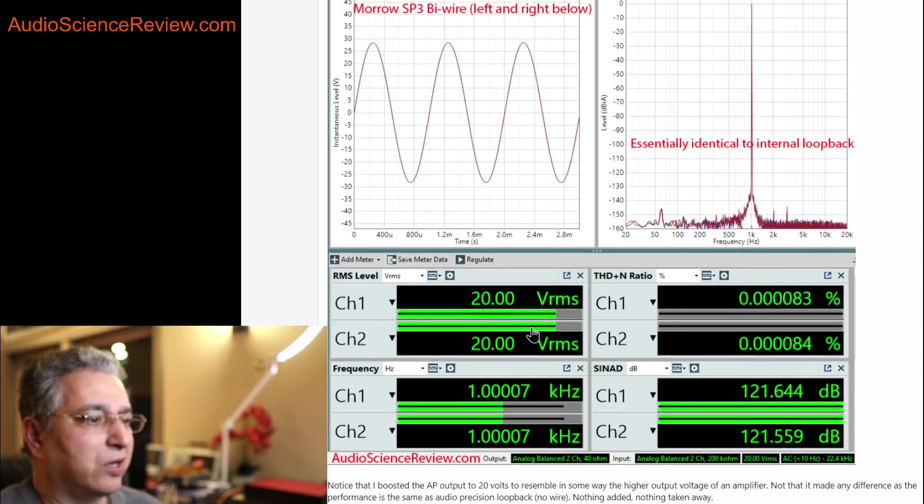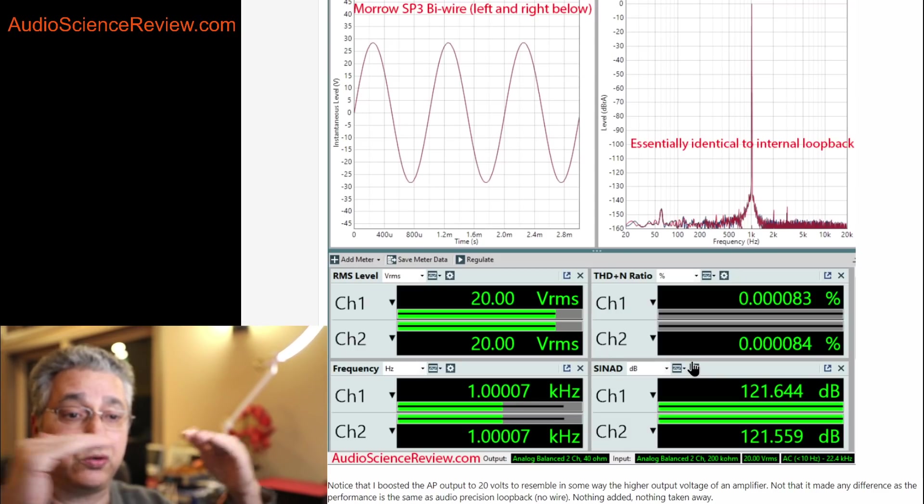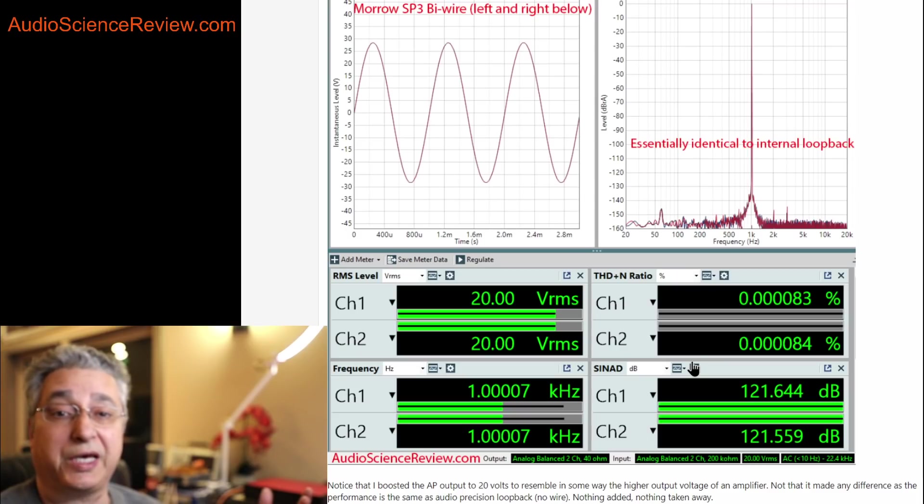So I went ahead and connected the input to output. My Audio Precision analyzer is quite capable, so I can dial up the output to 20 volts, simulating an amplifier producing probably around 50 watts or so into 8 ohms. And when I do that, there's nothing there to see in that the SINAD is 122 dB, which is world-class for DACs. Amplifiers can't even get this close. Basically what it's doing is showing as good as the analyzer itself can measure itself.